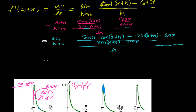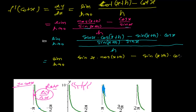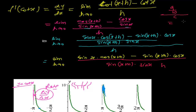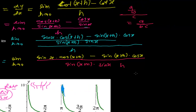So we now have: limit h tends to 0 of [sin x · cos(x+h) minus sin(x+h) · cos x], whole divided by [sin(x+h) · sin x · h]. And since a/b divided by c equals a/(bc), I am combining everything in the denominator.